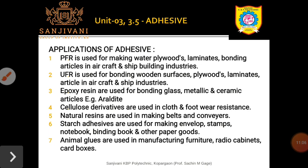Cellulose derivatives are used in cloth and footwear — the sole of your footwear can be attached with the help of this adhesive system. Natural resins are used for making belts and conveyors. Starch adhesives are used for making envelopes, stamps, notebook binding, books, and other paper products.